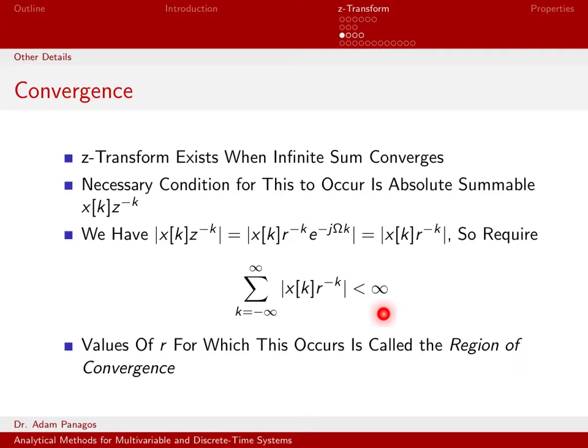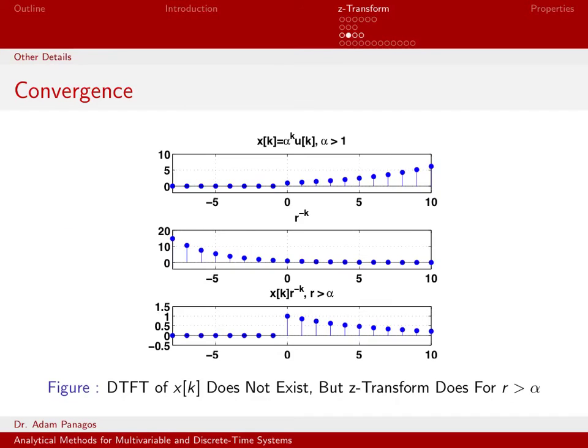Let's look at just a simple example here just to get a feel for what's going on with this quantity r and what we mean by convergence. Here is the signal x of k equals alpha to the k u of k. And I've actually chosen an alpha whose magnitude was greater than 1. So it was 0 for all negative time. And then at time 0, it turns on. And since alpha is greater than 1, as time goes on, this signal is kind of blowing up. As k gets larger and larger, alpha to the k gets bigger and bigger.